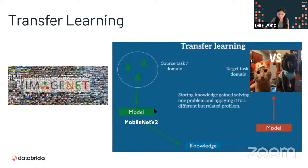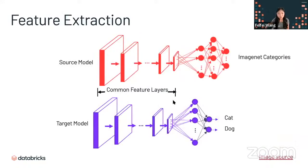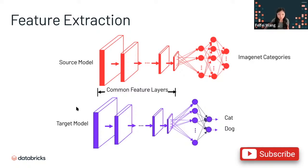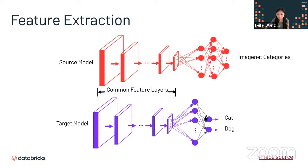Here's a brief recap: the top model represents our MobileNet V2 with many deep layers, eventually doing classification on ImageNet categories — up to 1,000 classes. With transfer learning, we maintain those common feature layers at the front and modify only the last layers into a binary classification of cats and dogs. We push our two to three thousand cat and dog images into this new model and retrain the last layers to still achieve high accuracy in classifying cats or dogs.